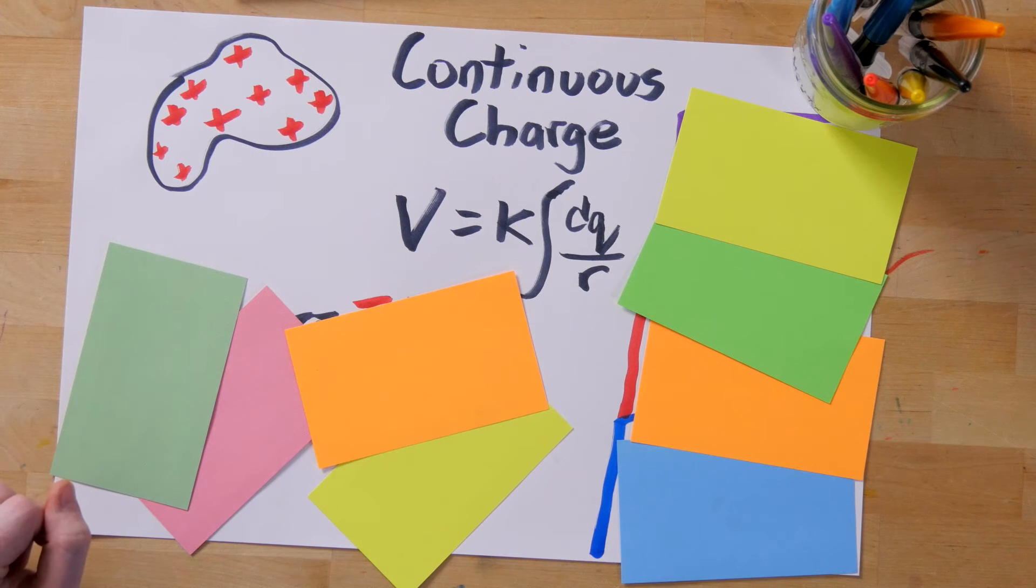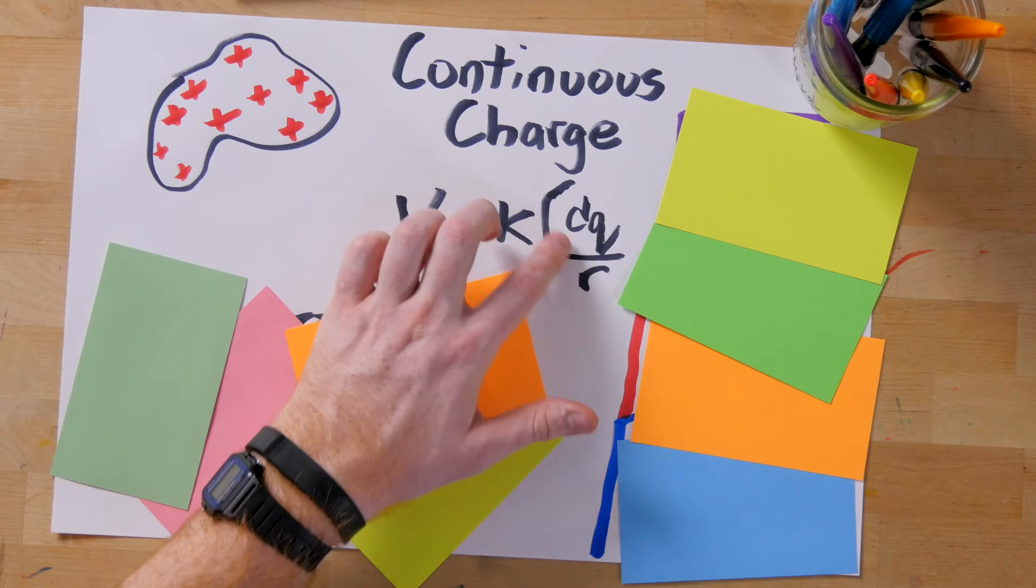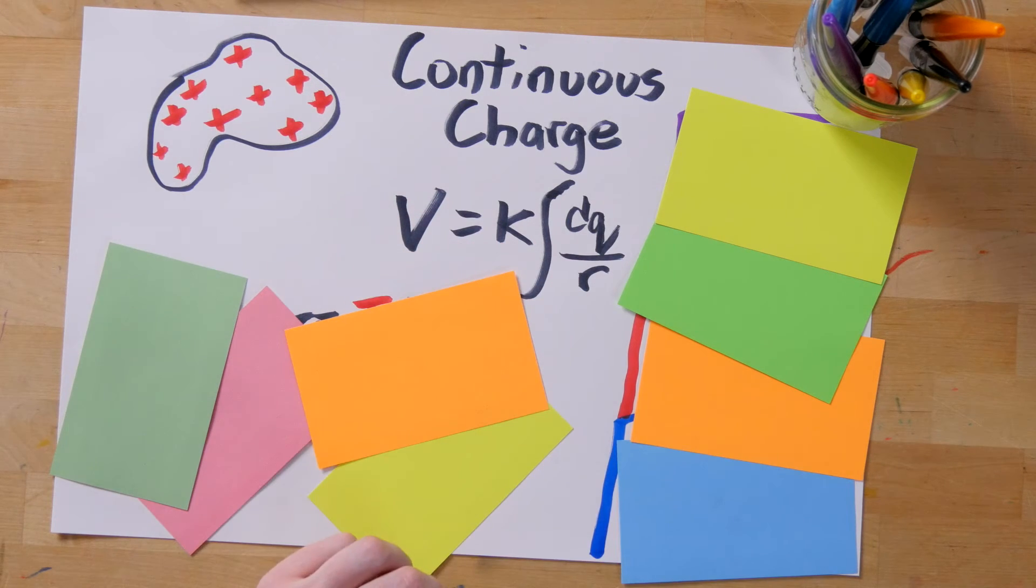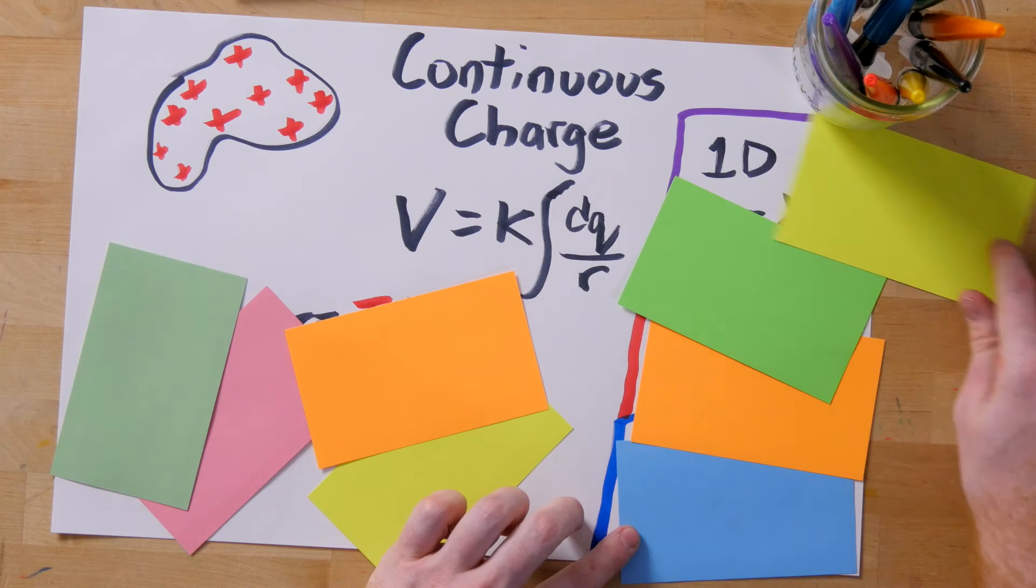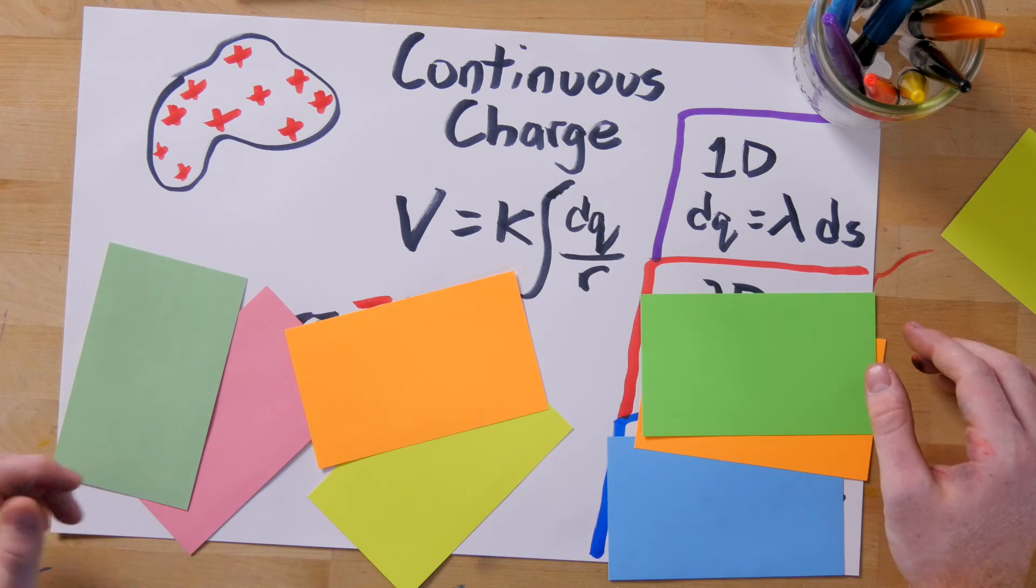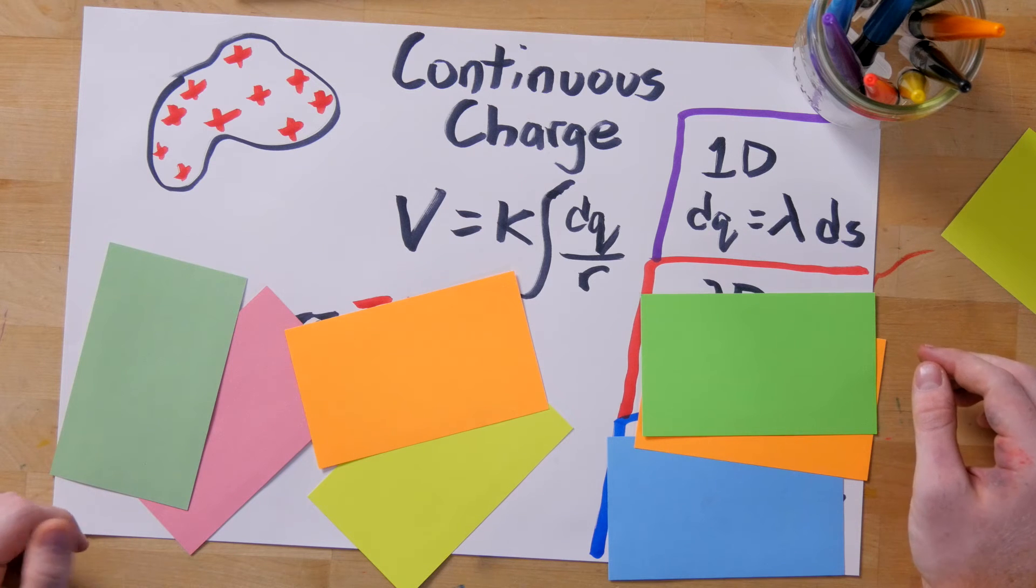Now the trick in doing this for different systems is coming up with a way to describe dq and r. For dq, it depends on the number of dimensions we're in. Total charge Q divided by length, area, or volume gives you charge density.